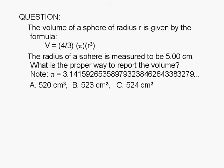The volume of a sphere of radius r is given by the formula: volume equals four-thirds of pi times r cubed. The radius of a sphere is measured to be 5.00 centimeters. What is the proper way to report the volume?